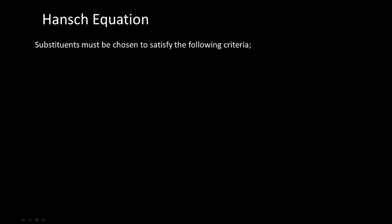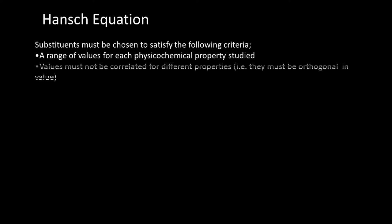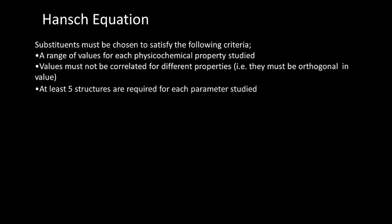Substituents must be chosen to satisfy certain criteria: a range of values for the physicochemical property. I need to decide which substituents to put into the parent molecule to achieve this range of changes. The values should not be correlated — that is very important. And of course, the rule of thumb is at least 5 structures for each parameter being studied.